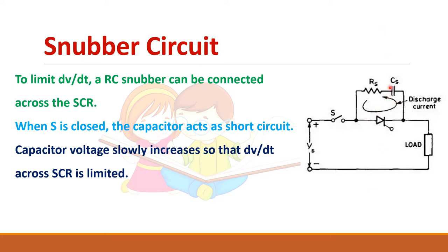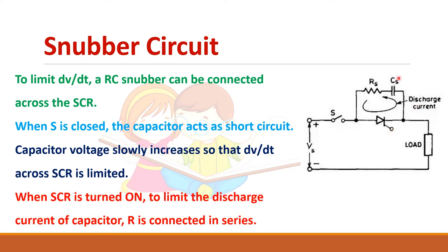But when the capacitor is fully charged, the capacitor voltage will become Vs. Now if the SCR is turned on, the capacitor will discharge its current through the SCR, and at that time the current may reach a very high value. So normally a resistor is connected in series with the capacitor to limit this discharge current. This is the famous RC snubber circuit, used across the SCR in almost all applications.